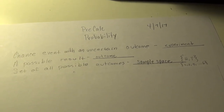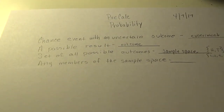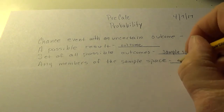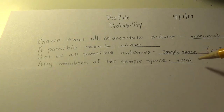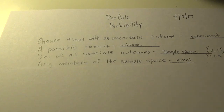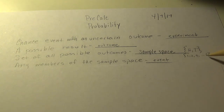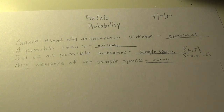Any member of the sample space is called an event. For example, when rolling a six-sided die, the even numbers — two, four, six — are in the sample space, so getting an even number is an event.